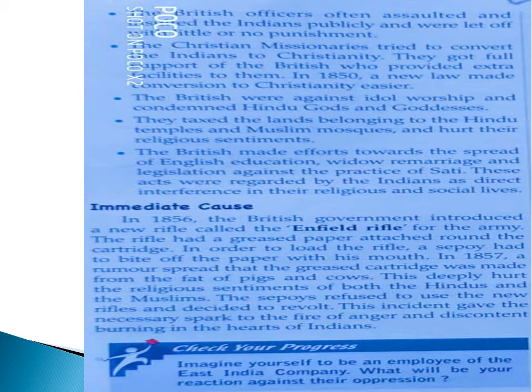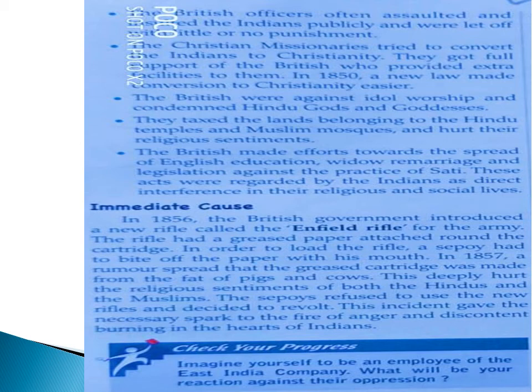There was also an immediate cause. In 1856, the British government introduced a new rifle called the Enfield rifle for the army. This rifle had a greased paper attached around the cartridge. To load the rifle, a sepoy had to bite off the paper with his mouth. In 1857, a rumour spread that the grease on the cartridge was made from the fat of pigs and cows, which deeply hurt the religious sentiments of both Hindus and Muslims. The sepoys refused to use the new rifles and decided to revolt. This incident gave the necessary spark to the fire of anger and discontent burning in the hearts of Indians.